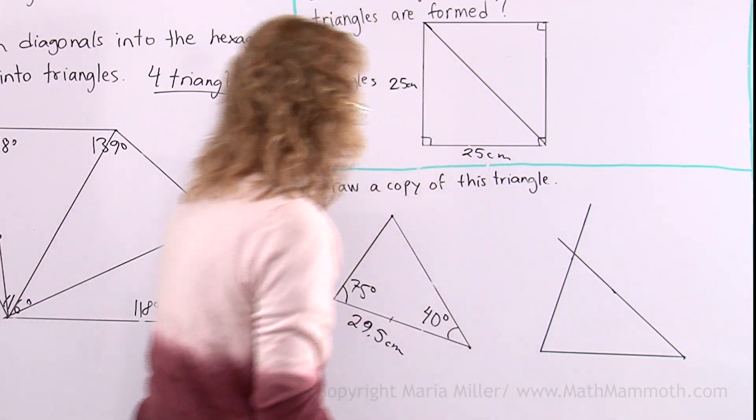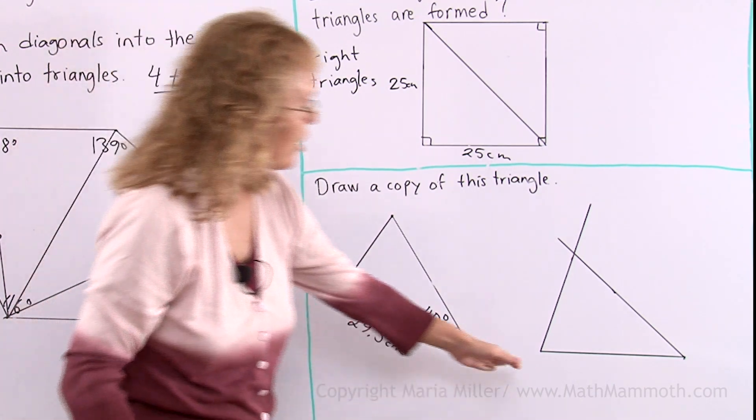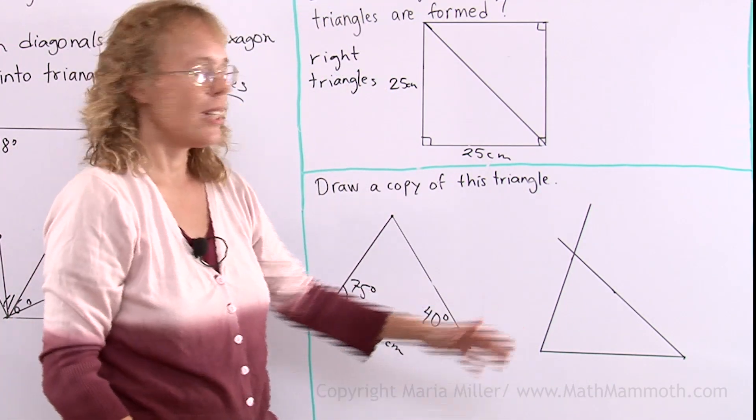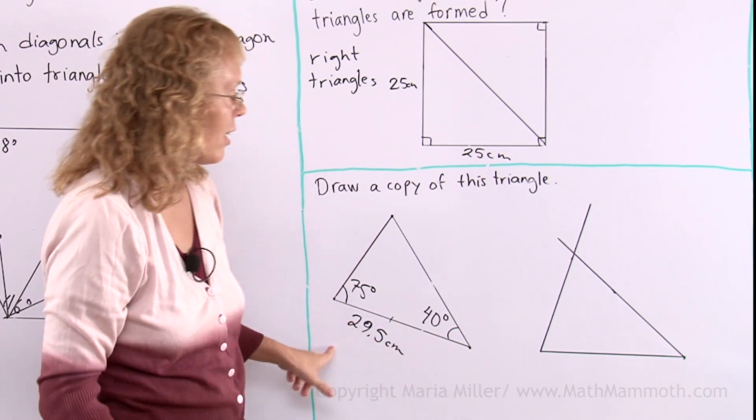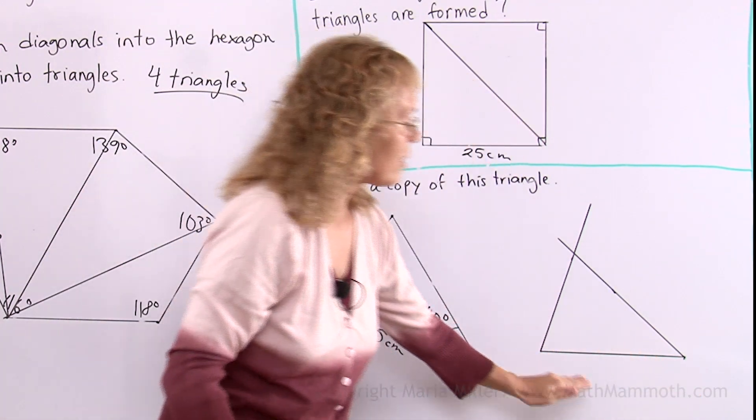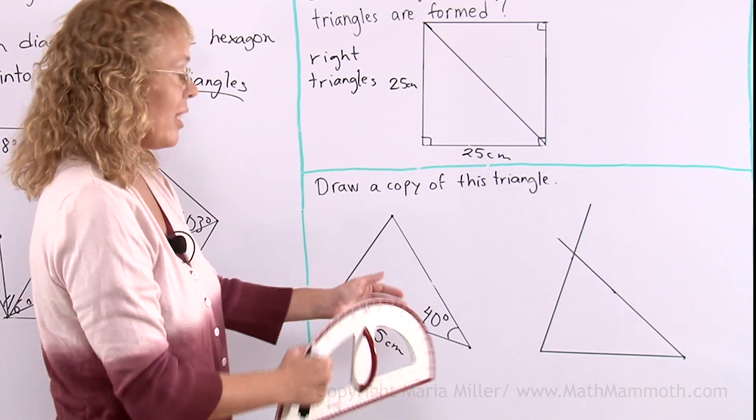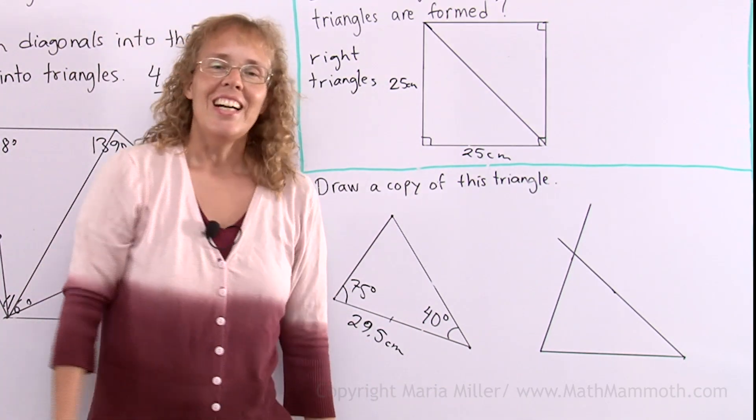Nothing else is needed to be done. It is in a little bit different orientation, basically as if I had rotated it, because I did not draw this first line slanted like this, but trying to make it straight. But anyway, it's a copy of the triangle. I hope this was helpful.